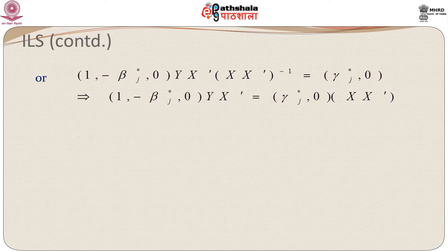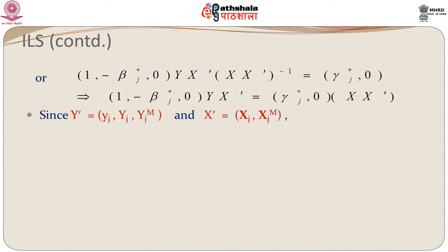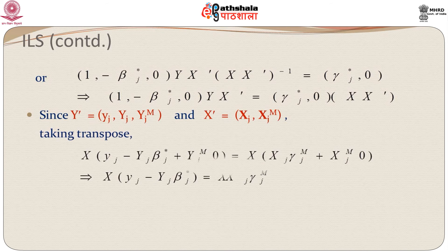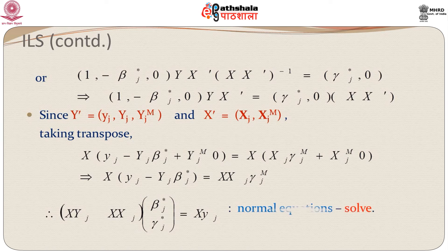After further simplification, remembering that y is composed of y_j, Y_j, Y_jm and x of x_j and x_jm, we ultimately arrive at the normal equations: a matrix with components [x'Y_j, x'x_j] and parameter vector [beta_j*, gamma_j*] equals x'y_j. These are the normal equations which we need to solve.